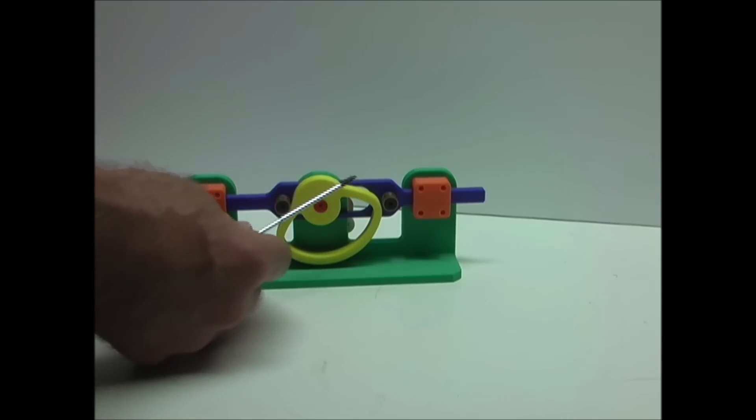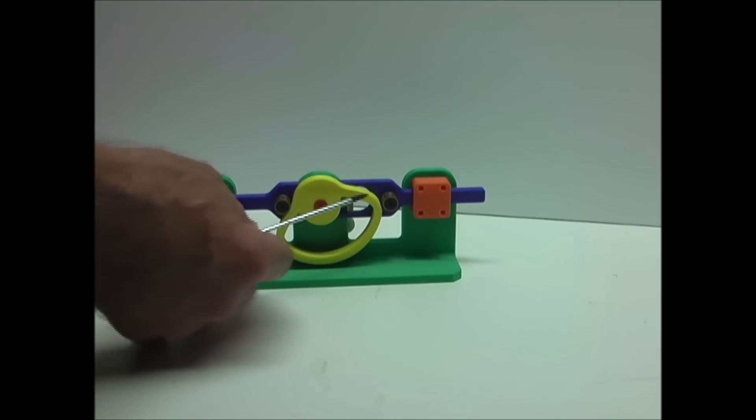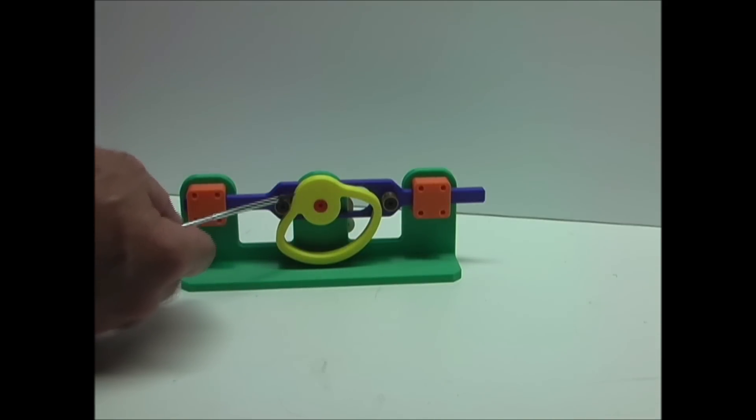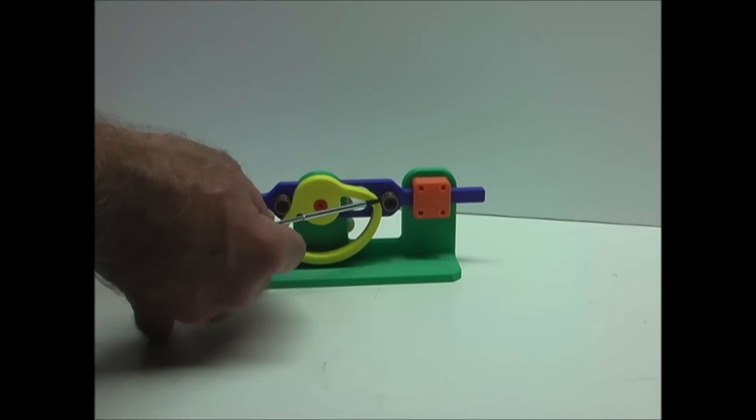On this one, you can see the wheel has been modified. It has a profile on it instead of being round, and this is called a cam. On either side of this cam, mounted into the arm, are these cam followers, and they follow the profile of the cam as it turns.